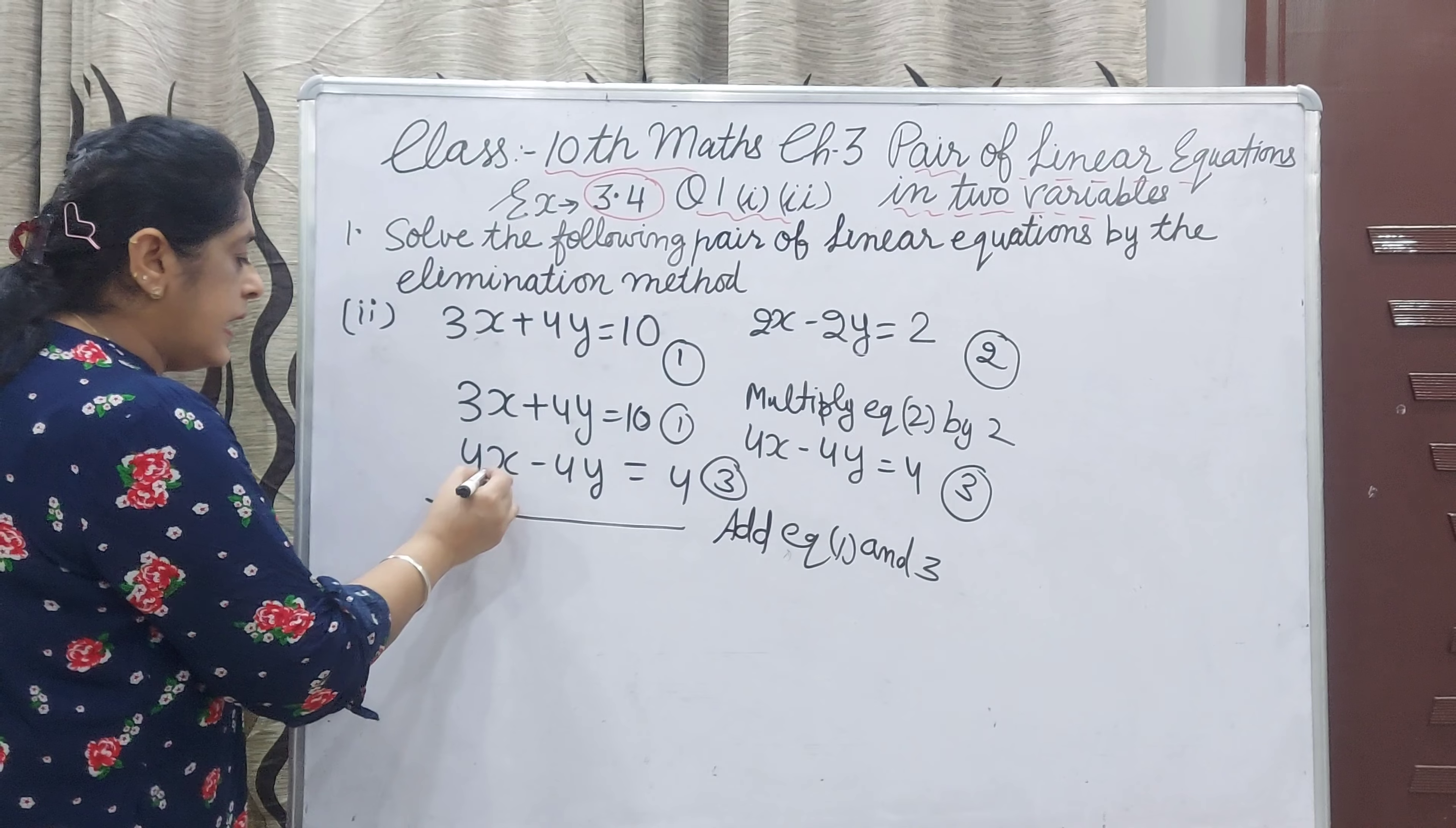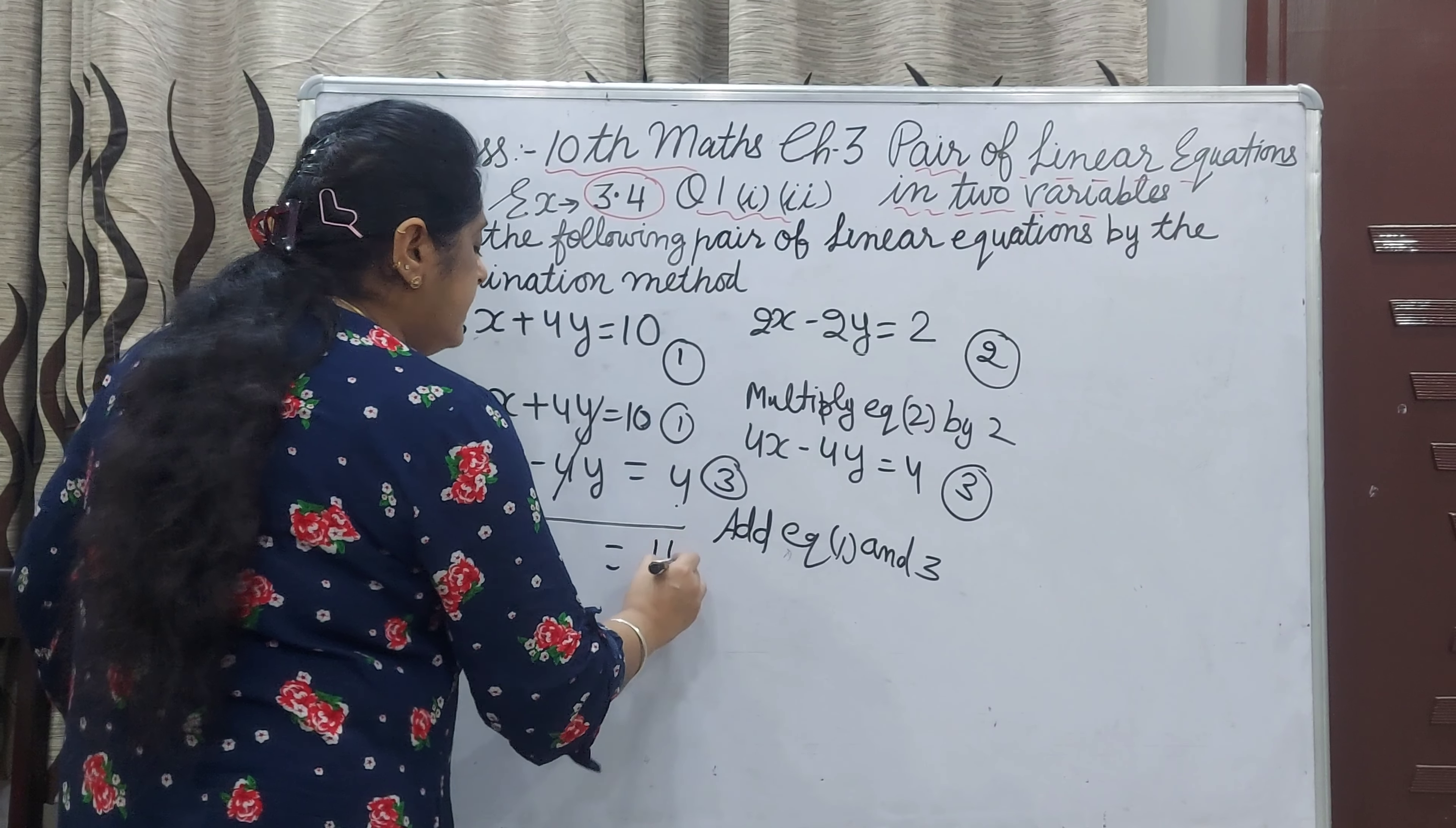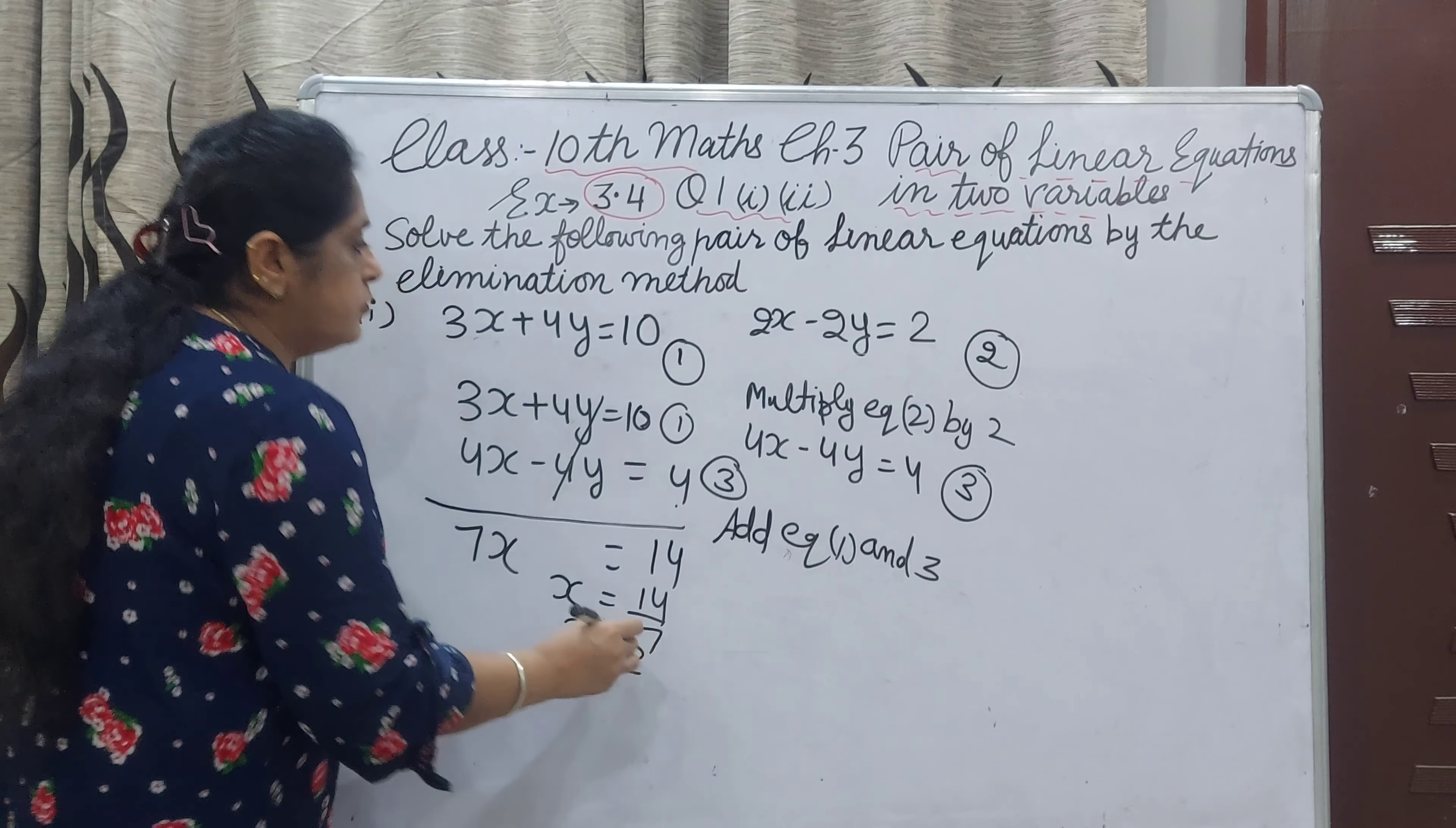Now you are adding, not subtracting. 3x and 4x, there will be 7x. And this will be cut down. And 10 and 4 when you add, it will be 14. X will be 14 upon 7. X value will be 2.